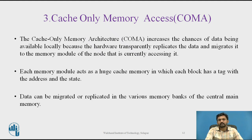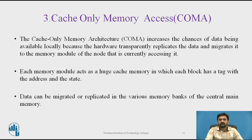Cache Only Memory Access, or COMA, is the last model. Data does not have specific permanent locations — data can be migrated and replicated in the various memory banks of the central main memory. The cache only memory architecture increases the chances of data being available locally, because the hardware transparently replicates the data and migrates it to the memory module of the node currently accessing it. Each memory module acts as a huge cache memory in which each block has a tag with the address and the state.